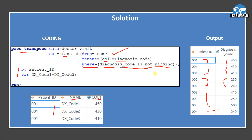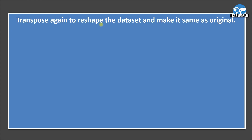Now that we can reshape the dataset from horizontal to vertical, suppose we want to go back and generate the original dataset from this transposed output. We can achieve this using PROC TRANSPOSE again — we just need to change which variables we use.